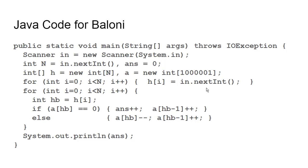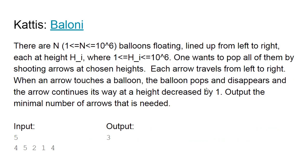An interesting question: this approach works because heights are at most 10 to the 6. But if the constraint were heights up to 10 to the 9, how would we solve it? Even though heights can be up to 10 to the 9, we only have at most 10 to the 6 arrows, so only some heights will have arrows traveling. We don't need an array element for every possible height — we can use a more compact representation using a map, which maps each height that actually has arrows traveling to the count of arrows at that height.